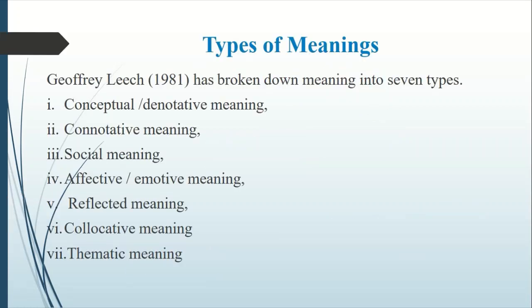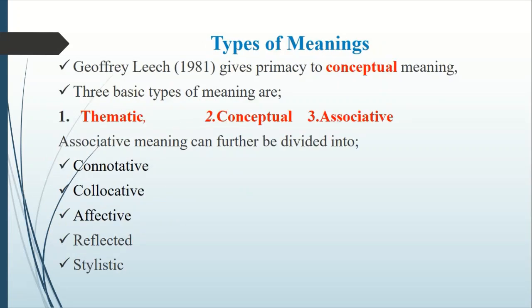Geoffrey Leach has broken down meanings into seven types: conceptual or denotative meaning, connotative meaning, social meaning, affective or emotive meaning, reflected meaning, collocative meaning, and thematic meaning. Geoffrey Leach gives primacy to conceptual meaning, and the three basic types of meanings are thematic, conceptual, and associative.